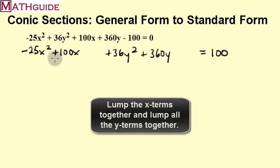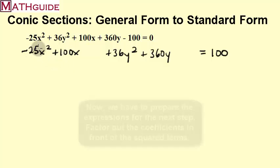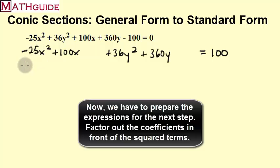Now in order for us to continue, the coefficient of our square term has to be 1. So I'm going to factor out this negative 25. So I'm thinking negative 25 times negative 4x will give me back to 100x there. If I multiply these two, I'd get back to 100. Now I'm going to factor out the 36 so I can get just y² here. If I divide 360 by 36, it's 10.